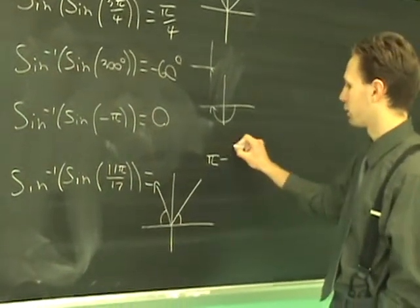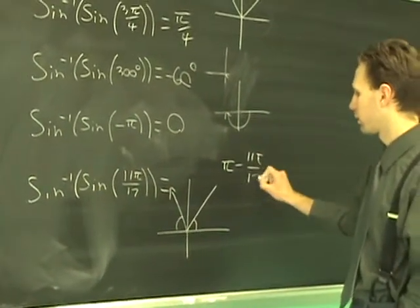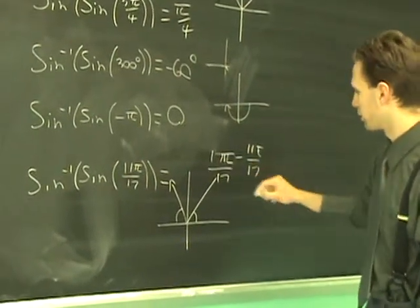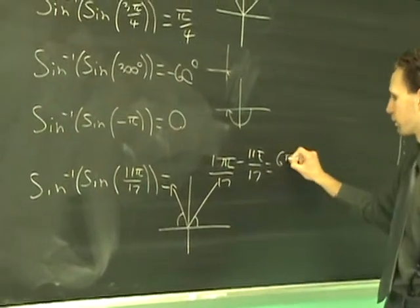So the magnitude of the angle that it's going to wind up being is going to be pi or 180 minus 11 pi over 17. And that's easy to do. 17 minus 11, that's going to give you 6 pi over 17 back.